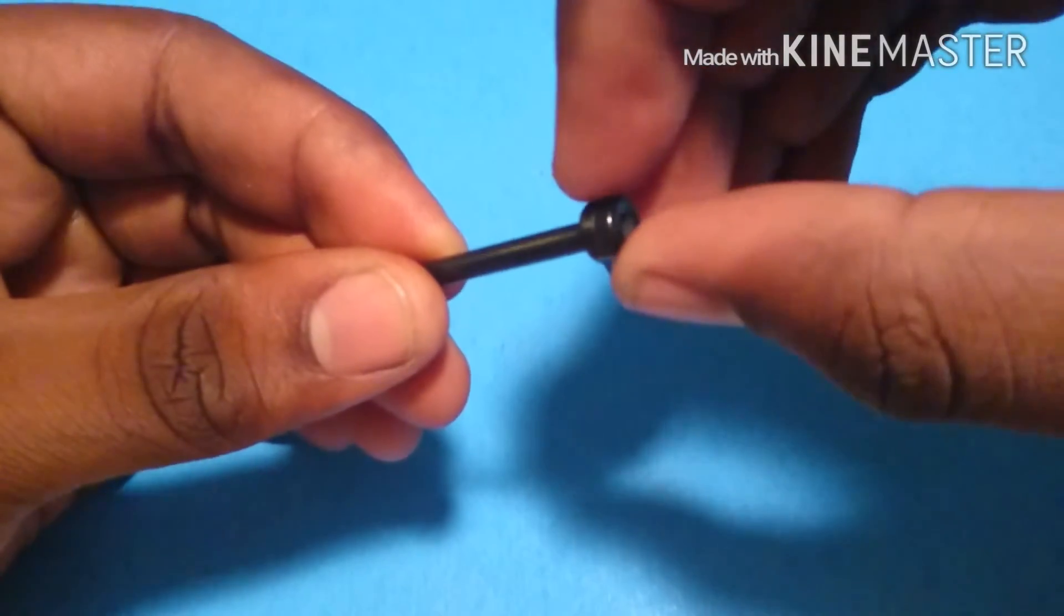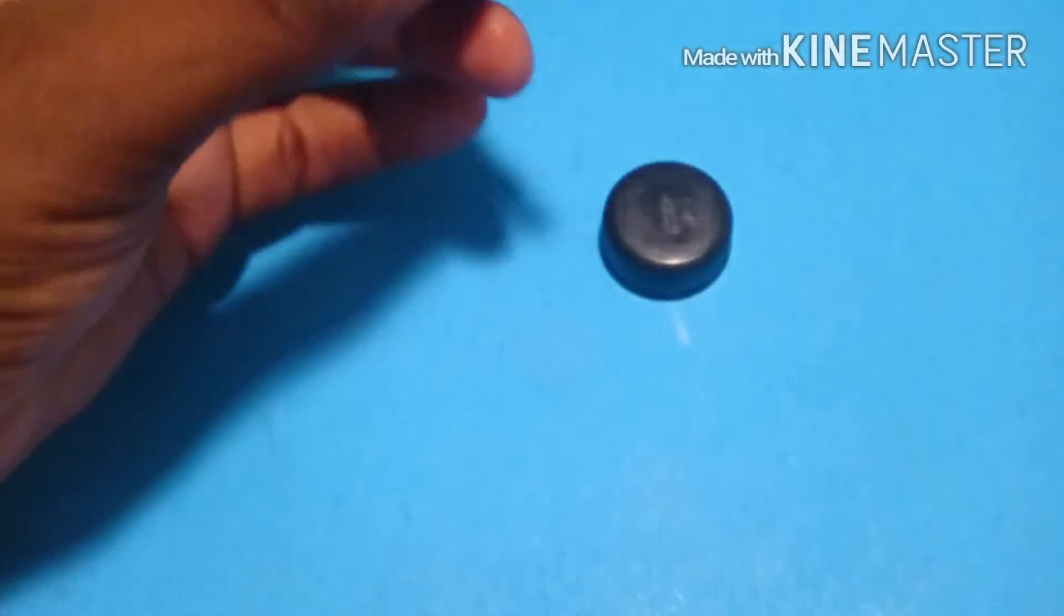We're going to glue on a base bead to the bottom of the stirrer, then glue it to the center of the bottle cap.